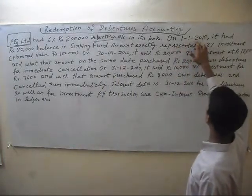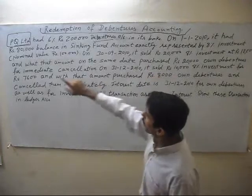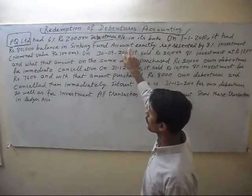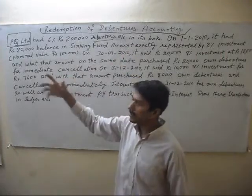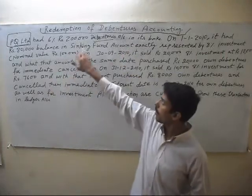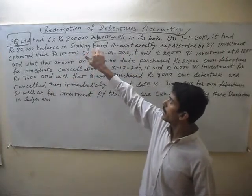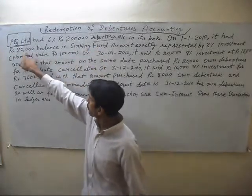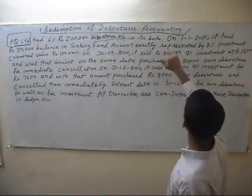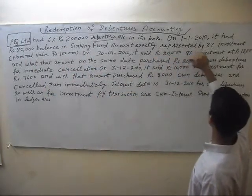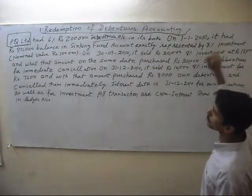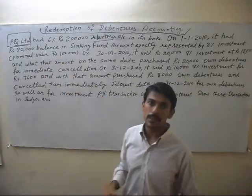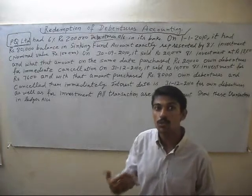On 1st January 2010, it had 80,000 balance in sinking fund account, which is also a liability. This is a sinking fund or debenture redemption fund of 80,000, exactly represented by 8% investment with a nominal value of 1 lakh. This means 80,000 is also our asset.